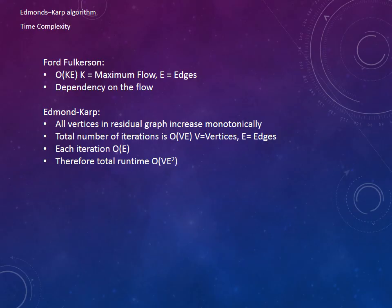The proof of the complexity of the Edmonds-Karp algorithm is too complicated to cover in this video, so we'll just outline it basically. First we can show that all vertices in the residual graph increase monotonically. Then we can also show that the total number of iterations is of the order V times E, where V is vertices and E is edges. If each iteration is of order E, then the total runtime is order V times E squared.